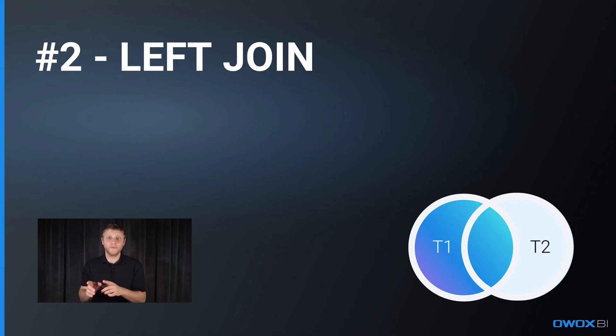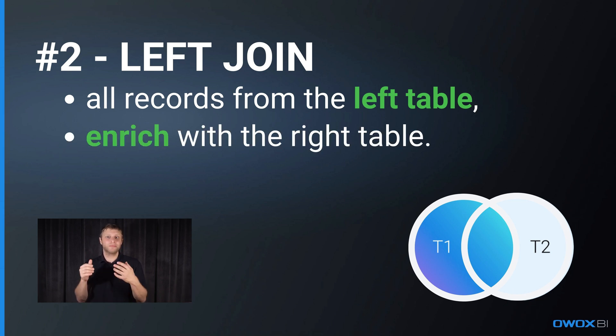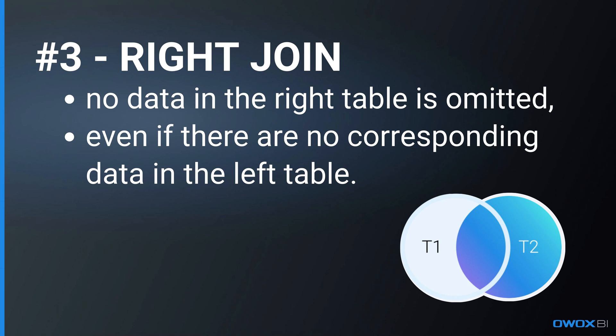Opt for Left Join when you want to retrieve all records from the left table but enrich those records with data from the right table. For example, you need to list all products and any associated orders — products without orders will still appear on the list but with order details as null. Right Join is similar to Left Join but focuses on the right table. It's less common but useful when ensuring no data from the right table is omitted, even if there are no corresponding entities in the left table. For example, if you want to display all orders and match them with product details if available, use Right Join.